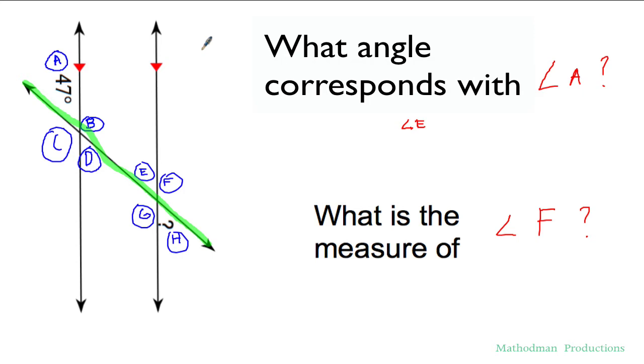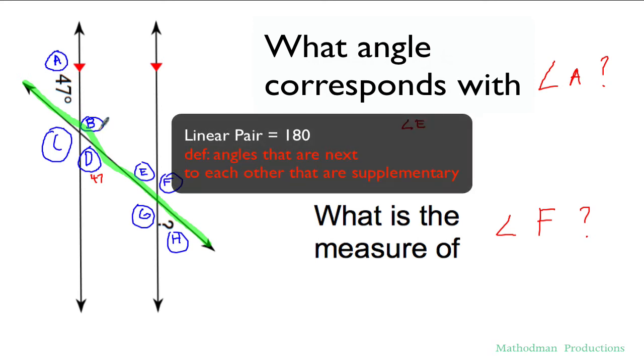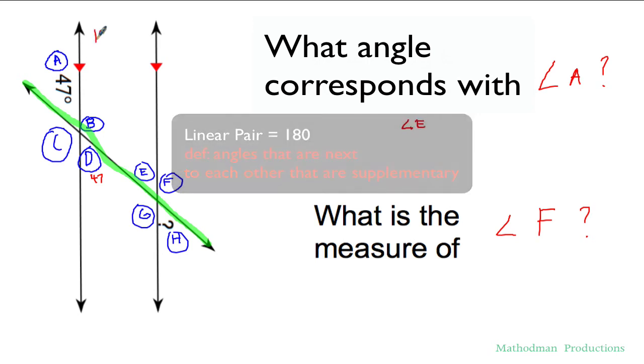Sometimes even if they don't ask for it, I tend to just label every single angle in this transversal. That way it's easier to answer any questions that might arise. This is 47. A is vertical from D so that would make this 47. A and B are a linear pair so they have to add up to 180. To find angle B, I could just take 180 minus 47 and I would get 133.